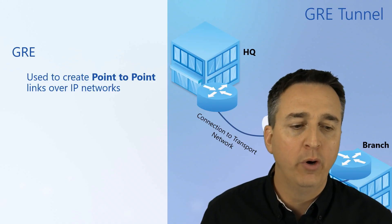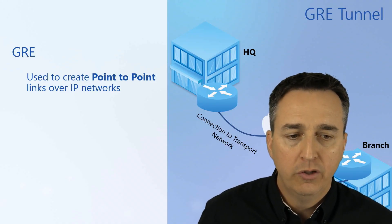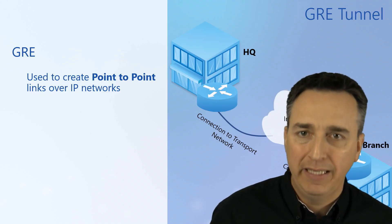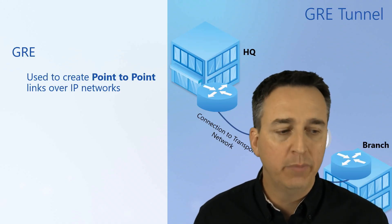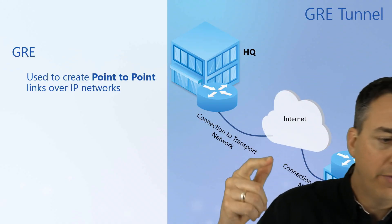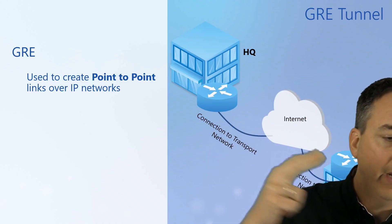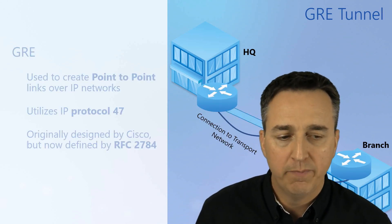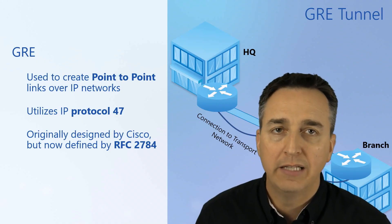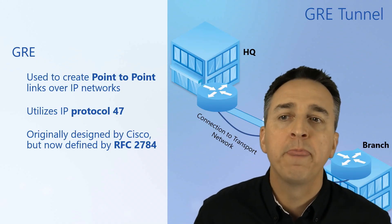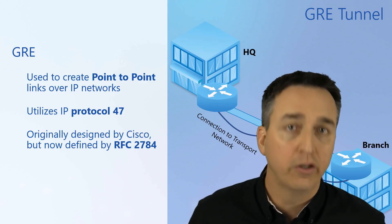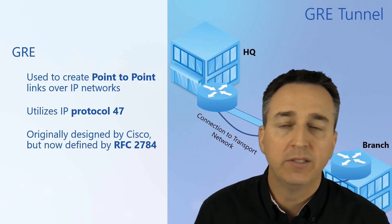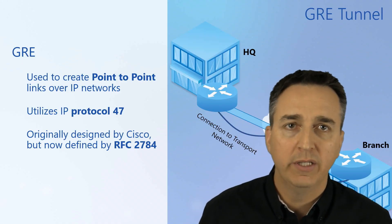GRE can be used to create a point-to-point link over an IP network — whether that's IPv4 or IPv6. Generic routing encapsulation utilizes protocol number 47, so it is its own protocol. It gives us the ability to encapsulate our traffic so it can be transported from one end to the other. Originally designed by Cisco, it eventually became RFC 2784.